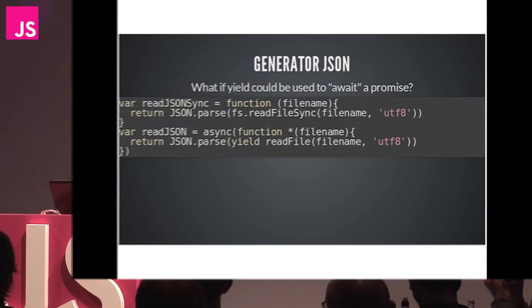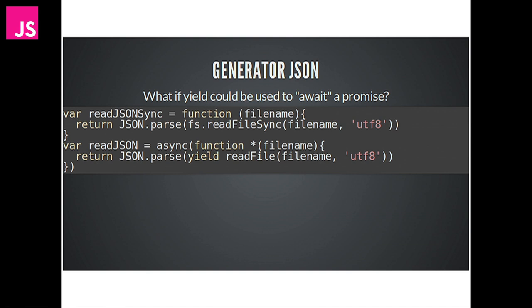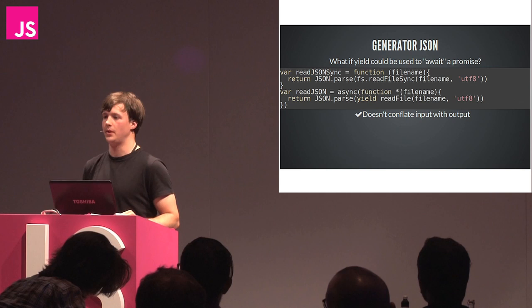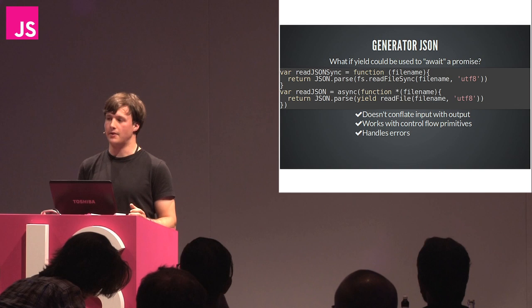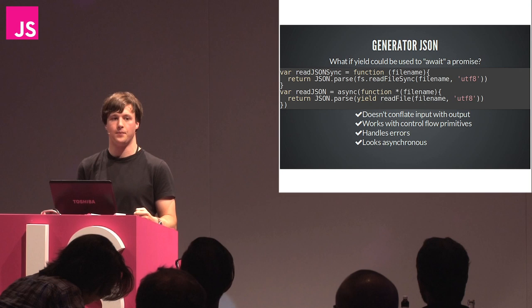As I mentioned at the beginning of the talk, we have a method for pausing a function mid-execution because that's what yield does. So with an async helper, we can make yield effectively wait for a promise to resolve and return the result. At the top you can see our original synchronous JSON function, and at the bottom you can see our asynchronous JSON function. All that changes is that we add the async wrapper, the star which denotes a generator function, and the yield to tell us we're going to wait for that promise to resolve. This doesn't conflate input with output, it will work with control flow primitives, it handles errors, and it remains looking asynchronous.